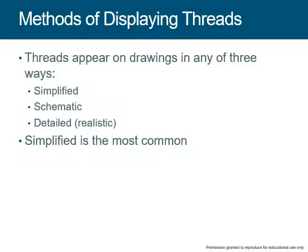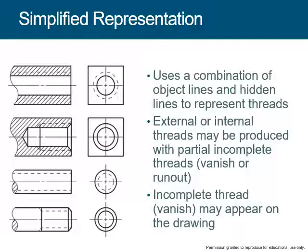On actual drawings, threads appear in three different ways: simplified, which is the most common; schematic; and detailed. The main problem with drawing a thread is that it's very time consuming and exhaustive to show all the details, which is why simplified is the most common. In simplified, you put a hidden line and then an oblique line — that's it.